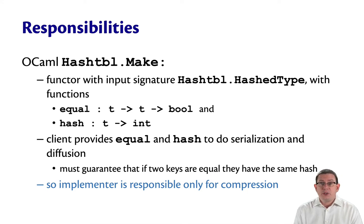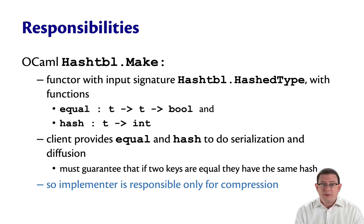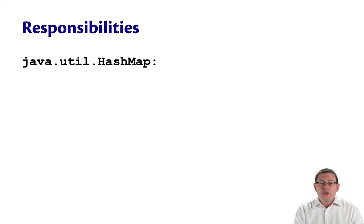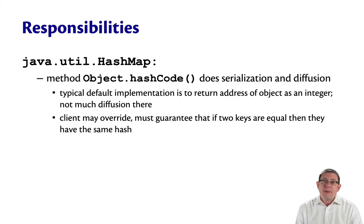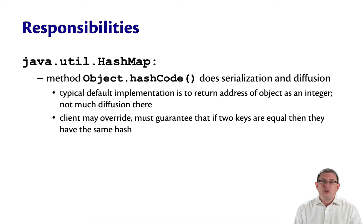Here the implementer is responsible only for compression — similar to what I implemented before, just ignoring issues about equality. Java's java.util.HashMap has a method in the Object class called hashCode. hashCode is responsible for doing the serialization and diffusion.